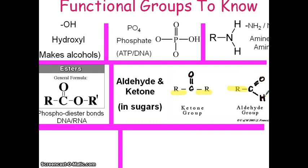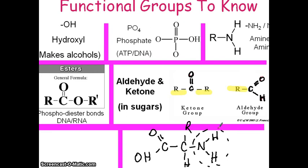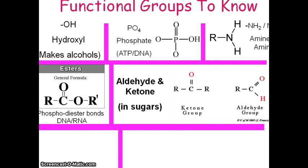You're going to need to know how these functional groups look. What I would probably do is give you a drawing — for example, the drawing of an amino acid — and say which part of this would be an amino group. I would expect that you would know that's the amino group that makes it an amino acid. So there's going to be an application of it. Phosphate's a really easy one — I would think you would know that one.